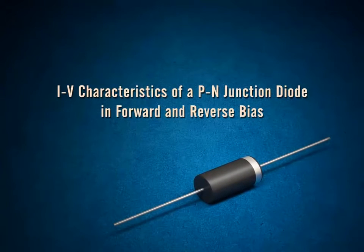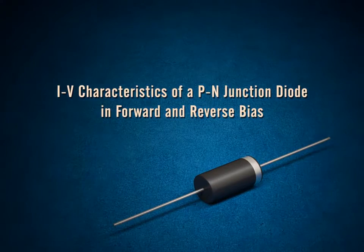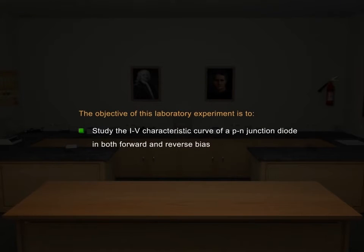IV characteristics of a P-N junction diode in forward and reverse bias. The objective of this laboratory experiment is to study the IV characteristic curve of a P-N junction diode in both forward and reverse bias.